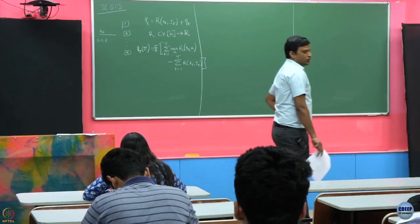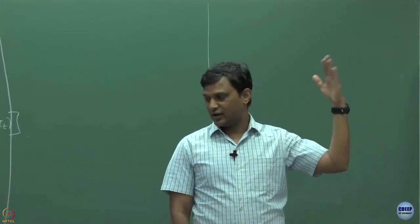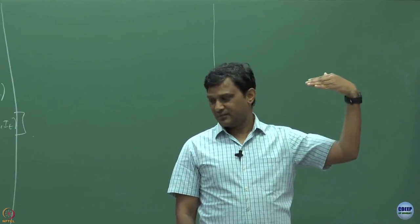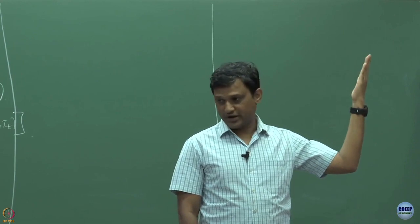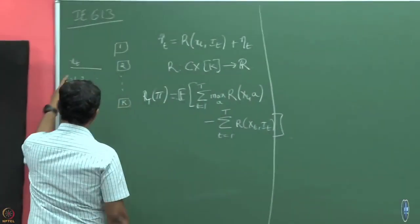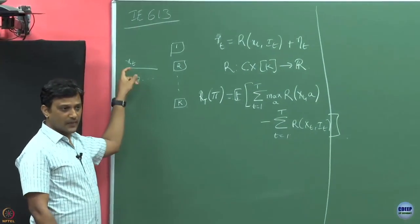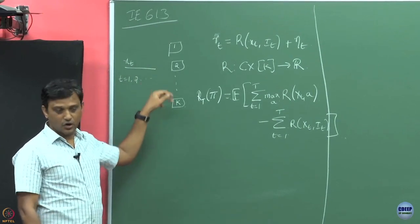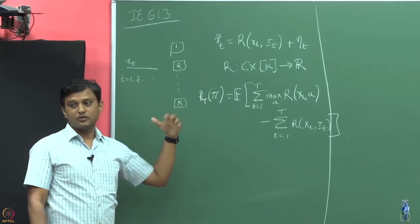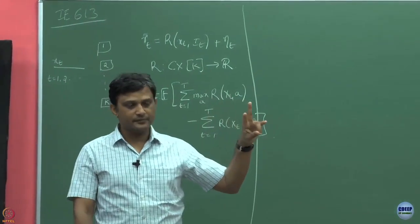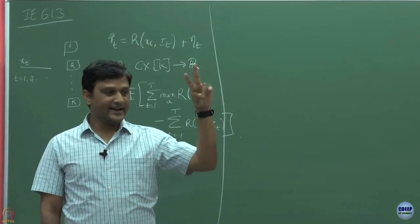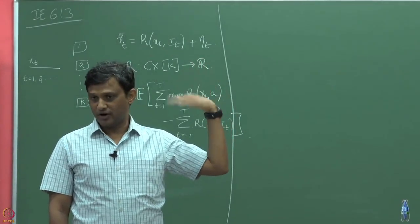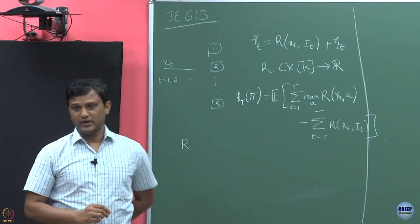In the contextual case, rewards across arms are not independent. The reward from one arm for a context could be similar to what you observe from others — there could be a potential correlation. For example, if I observe rewards for one context across arms, and then get another context, there could be correlation, because if two contexts correspond to similar users, their interests could be similar and we can expect similar rewards across arms.